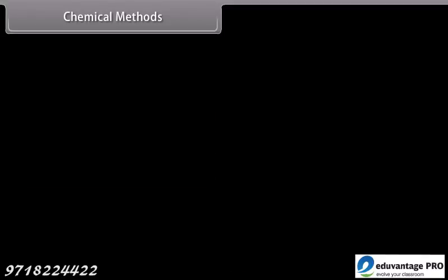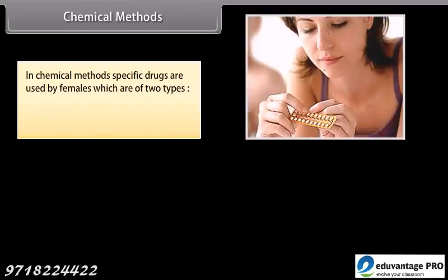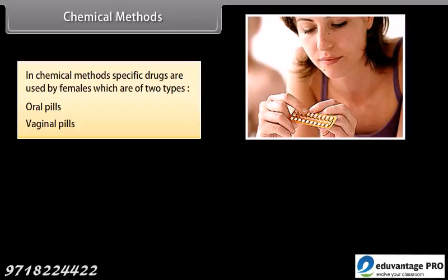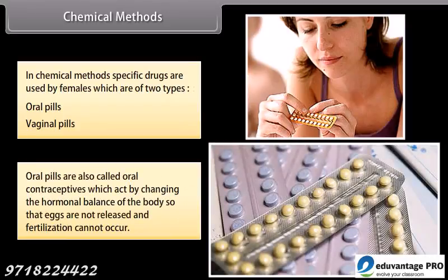In chemical methods, specific drugs are used by females. They are of two types: oral pills and vaginal pills. Oral pills are also called oral contraceptives, which act by changing the hormonal balance of the body so that eggs are not released and fertilization cannot occur.